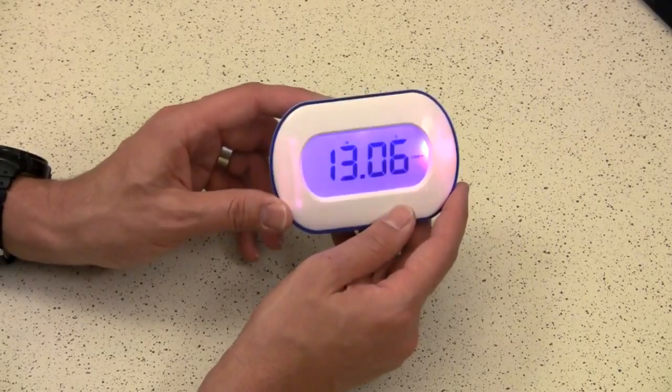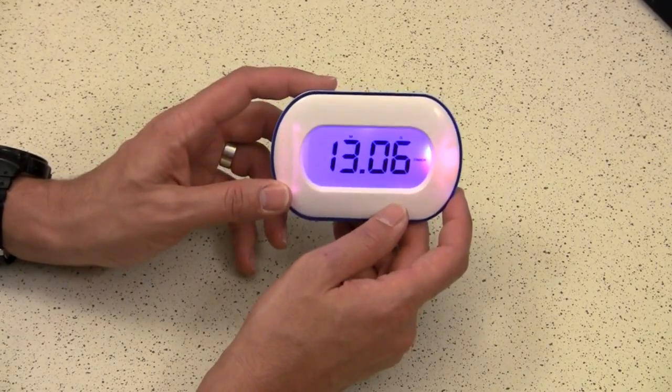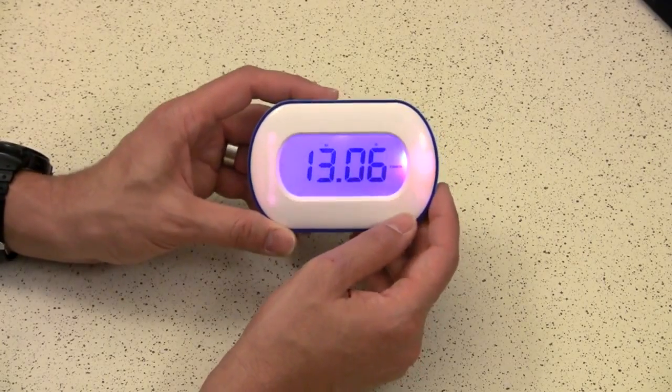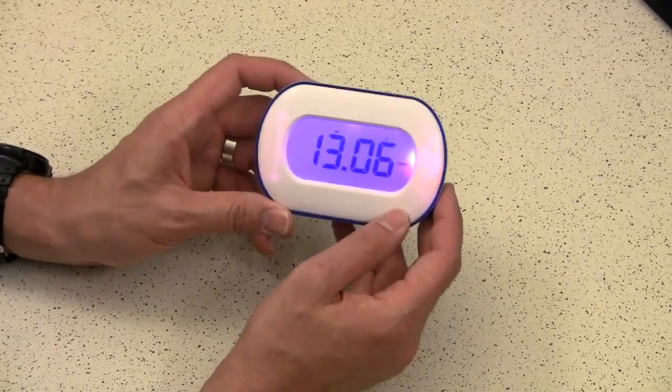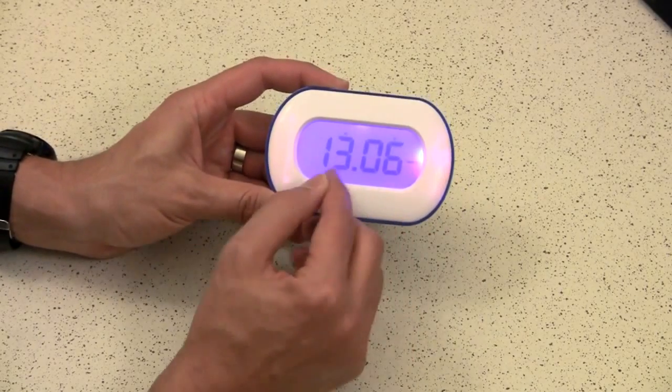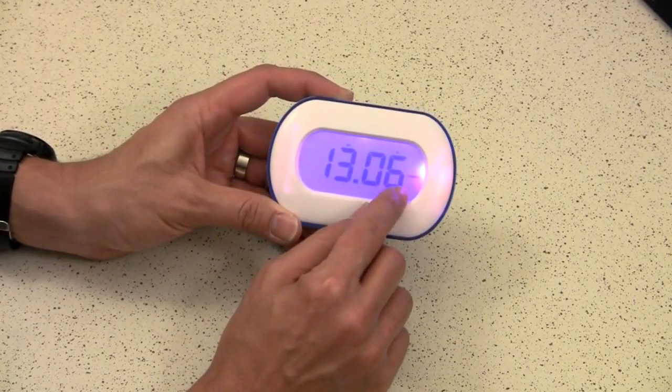That episode used a countdown timer on that as a slate because I didn't have a slate app on that specific phone. You can do the same thing with any timer. For example, this is scene thirteen, take six. As you can see it has some decent contrast.